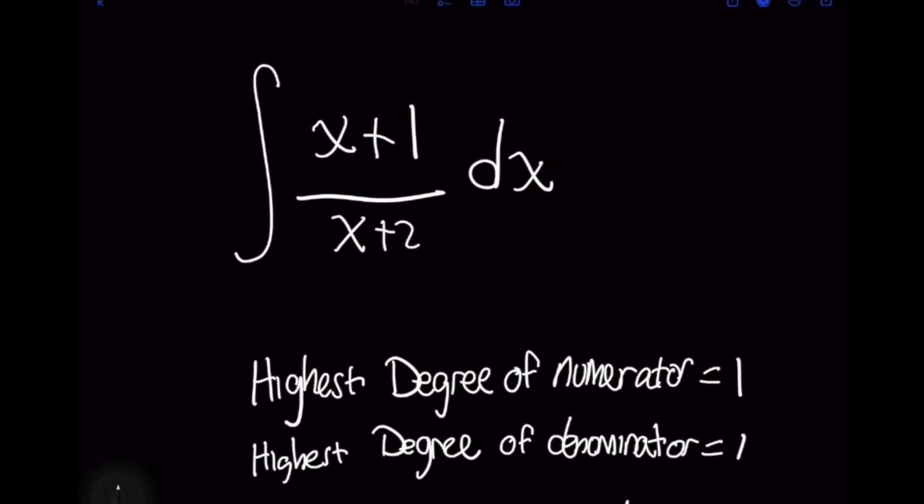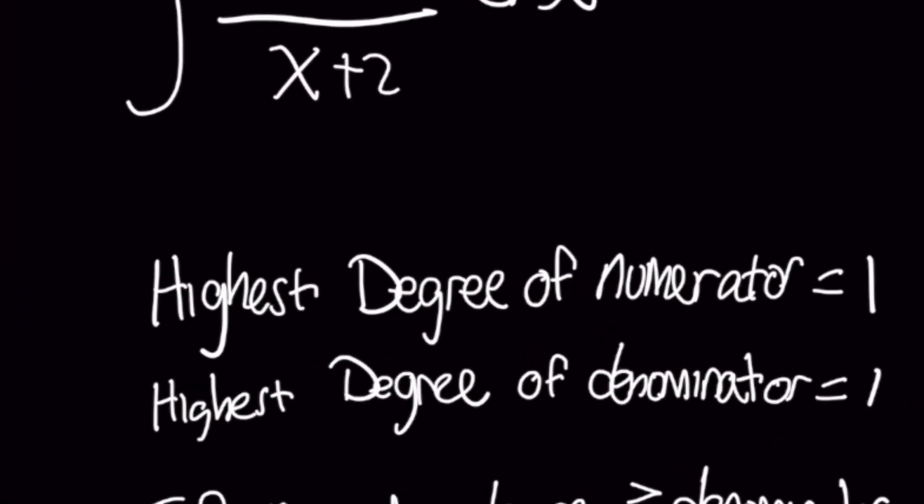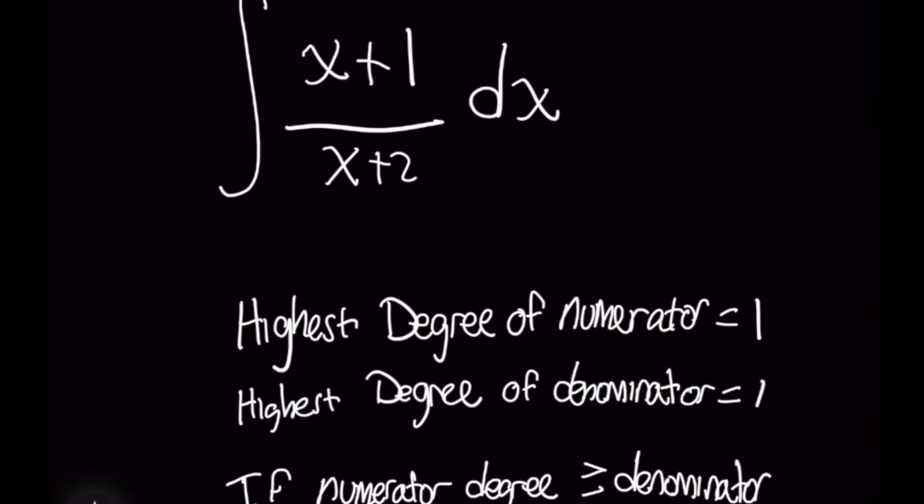The way I look at it is I compare the highest degree of x in the numerator and denominator. In this case they both have a value of 1. Before jumping into solving this I want to make sure if long division even makes sense. The key idea is that the highest order of the numerator needs to be greater than or equal to that of the denominator.